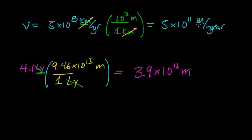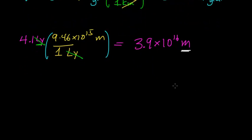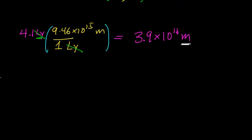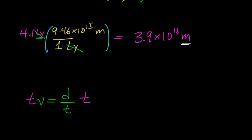We're using a unit of velocity of meters per year and a distance of meters, so we're using the same units of length or distance. We assumed that the velocity of the Voyager spacecraft was constant, so we can rely on the formula that says velocity equals distance divided by time. If we did not assume that the velocity was constant, this formula would not be valid. Multiplying both sides by time, this unit cancels out, and we get an equation that says time times velocity equals distance.